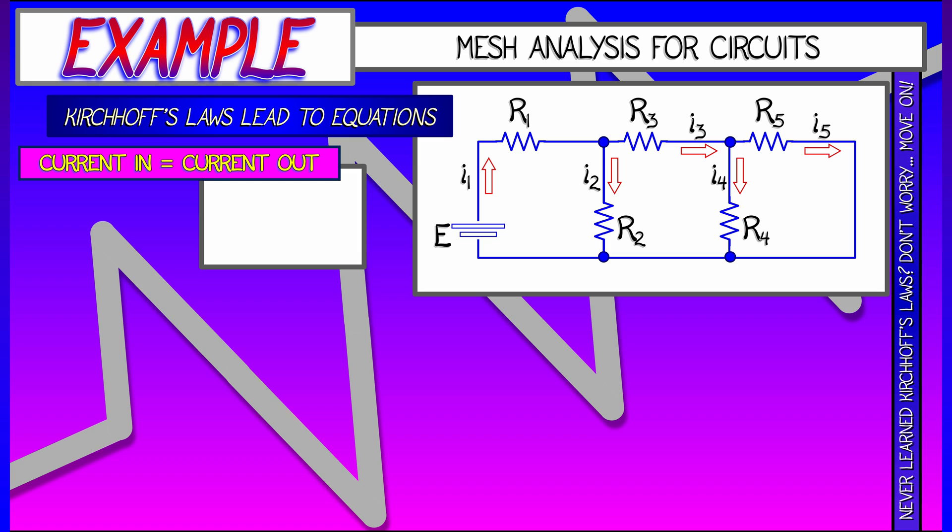What does Kirchhoff's Law say? The first one says that at a node where wires are coming in, wires are going out, the net current in has to equal the net current out. So take a look at that purple node there. How much current is flowing in? I1.